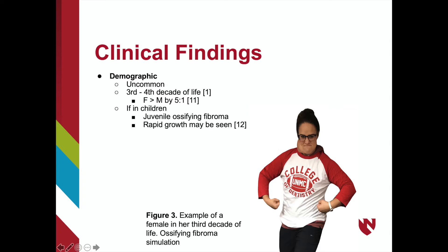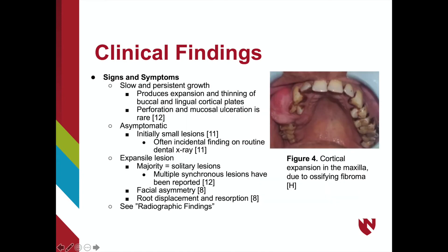Let's review the clinical findings associated with ossifying fibromas. Overall, it is an uncommon lesion, but when it does occur, it typically affects females in their third or fourth decade of life. Shelby simulates what it could look like if she had an ossifying fibroma — she's even the right age and gender to fit the description. If this lesion is seen in a child, it would be more specifically referred to as the juvenile ossifying fibroma.